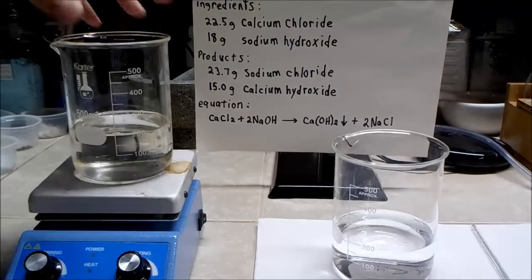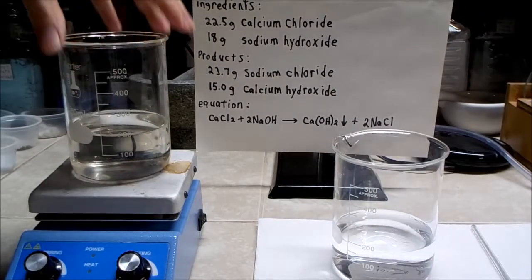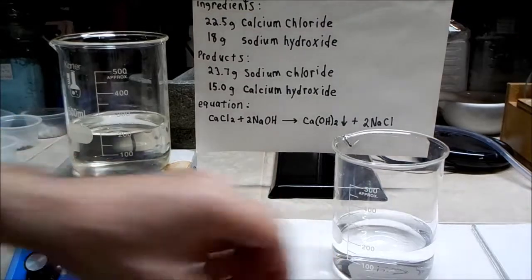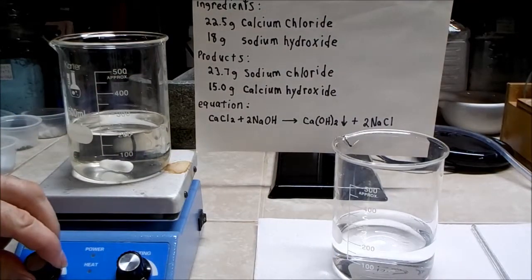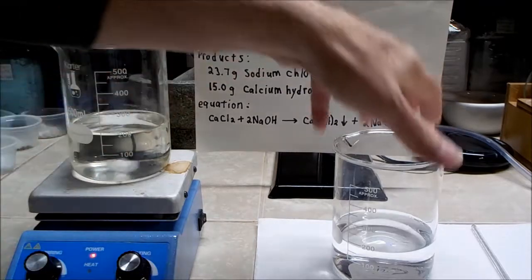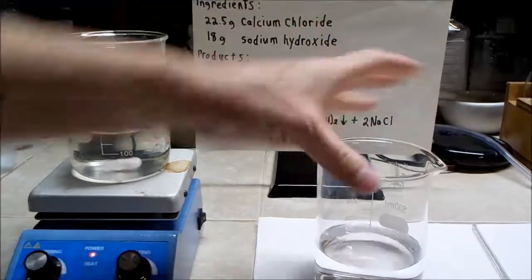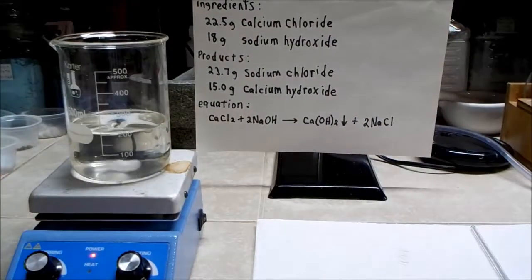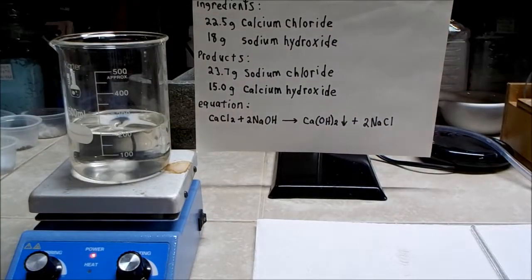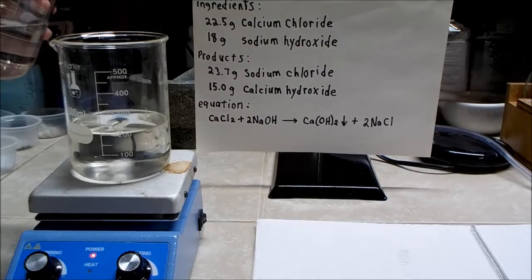All right, so I've got the calcium chloride solution up here on the hot plate, so I'll throw in a stir bar, turn that on. I'm going to slowly add the sodium hydroxide, and I've never tried this before, so I don't know exactly how it's going to go, so we'll both see it together.